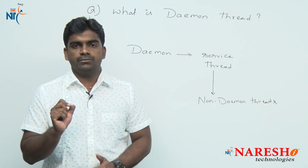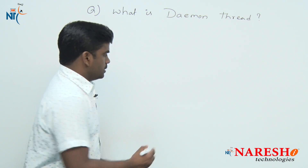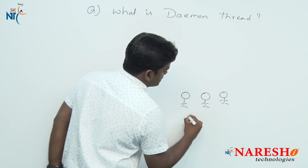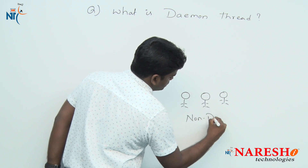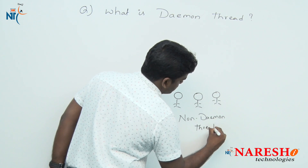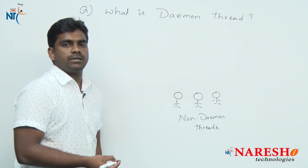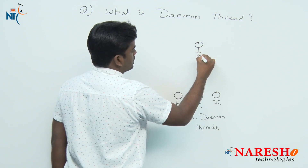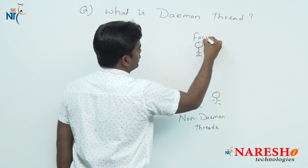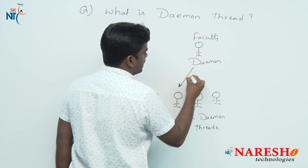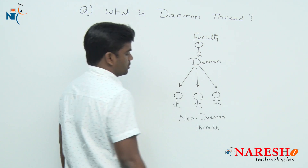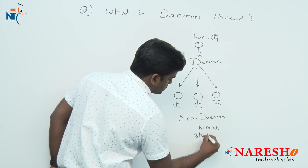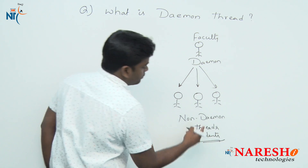To understand this, one simple example: there are some students. Students come under non-daemon threads — they are taking the service. Who provides that service? For example, the faculty comes under daemon thread, providing service to the non-daemon threads. So non-daemon threads are called students.